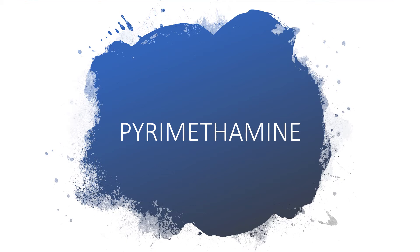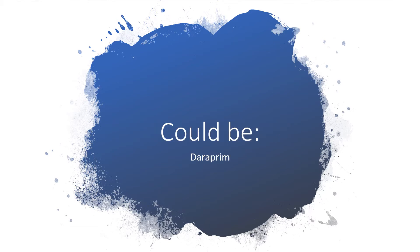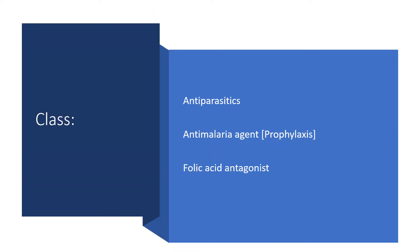Hi everyone, thanks for listening to my presentation. Today I'll be talking about pyrimethamine. The brand name for pyrimethamine is Daraprim. A lot of people will be familiar with this. Pyrimethamine belongs to the class of medications known as antiparasitics. It is a non-antimalarial agent, particularly for prophylaxis, and is a folic acid antagonist.